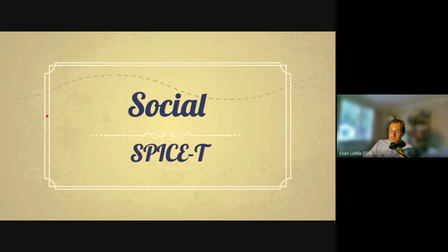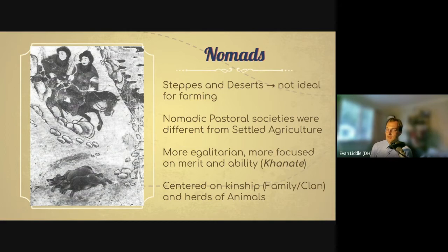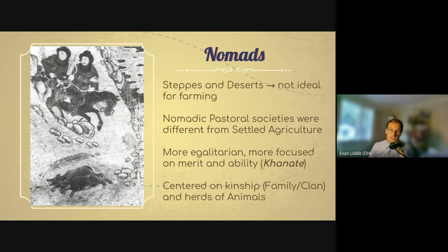The Silk Road grew out of many different existing trade networks. Now let's look at our themes, starting with social. When it comes to social structures on the Silk Road, probably the most important group to touch on is the nomads — people who live in regions not great for farming. As farming expanded, nomads were pushed into steppes and deserts. They are more egalitarian and merit-focused than settled societies, centered on kinship ties — family and clan — and often organized around herds of horses, cows, or camels.